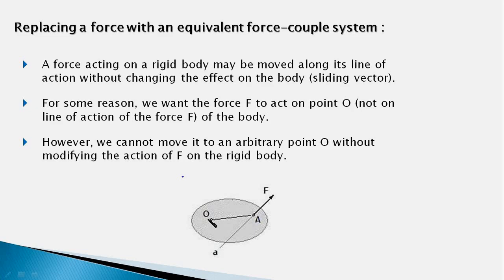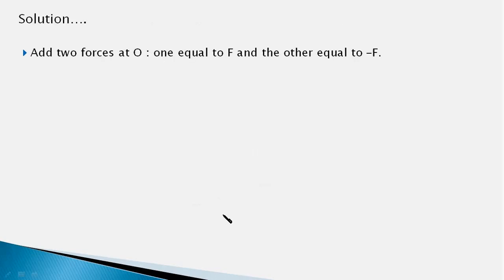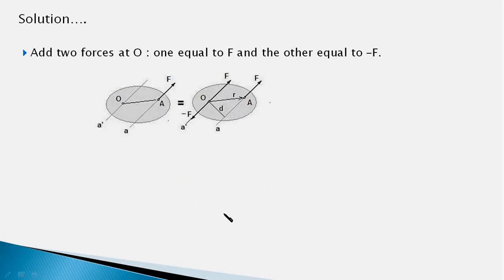So while we want the force to act at point O, we certainly want to avoid any change in the effect of the force on the body. We have a problem at hand, and fortunately there is a small trick that needs to be performed, and the solution is fairly simple. What it says is: add two forces at O, one equal to F and the other equal to minus F. The force is acting at A, and we want to make it act at point O.